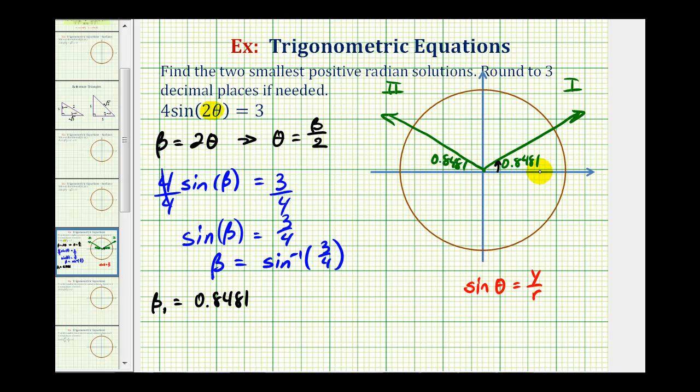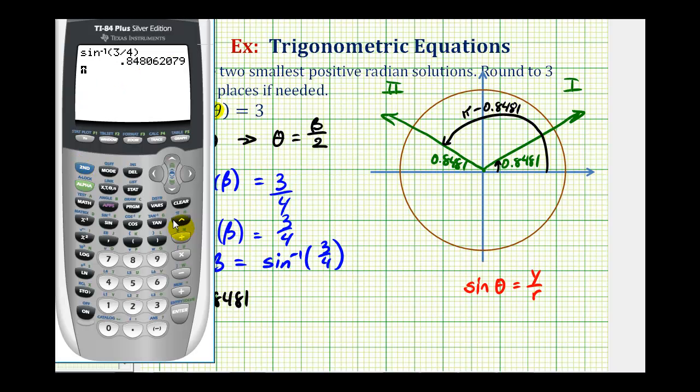So here's beta sub one. Then for beta sub two, one way to find this angle would be to take pi radians, half a rotation, and then subtract this reference angle to determine the measure of the second solution. So let's go ahead and do that. We would have pi radians minus 0.8481. So the second solution for beta in the second quadrant is approximately 2.2935 radians.